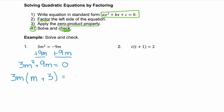Since we have a monomial times a binomial, we can't factor this anymore. So now we use the zero product property — step three. We know that our first factor, 3m, would have to equal zero, or our second factor, m plus 3, would have to equal zero. Solving the first, we divide by 3 and see m equals zero. For the second factor, we subtract 3 from both sides and see m could be negative 3.